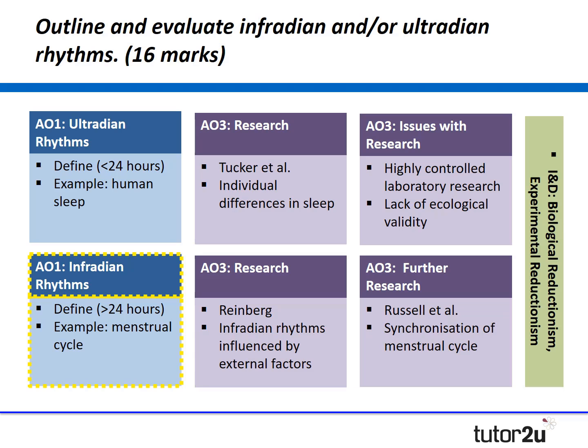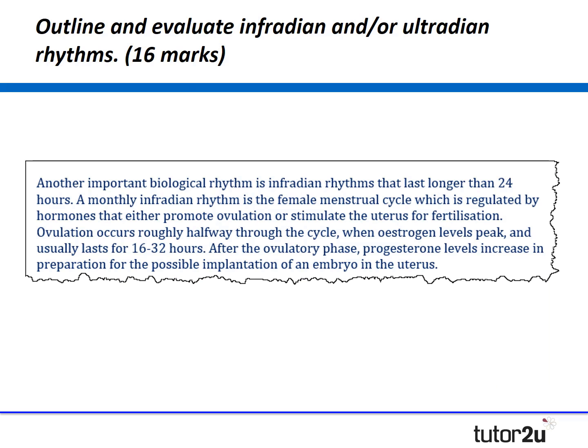So there we have it — we've done our first half of the essay. We've outlined ultradian rhythms, brought in research support, and then challenged that by identifying issues with the research. Let's now do exactly the same for infradian rhythms. Remember we've got another 75 to 80 words of outline to go here for our next AO1 point.